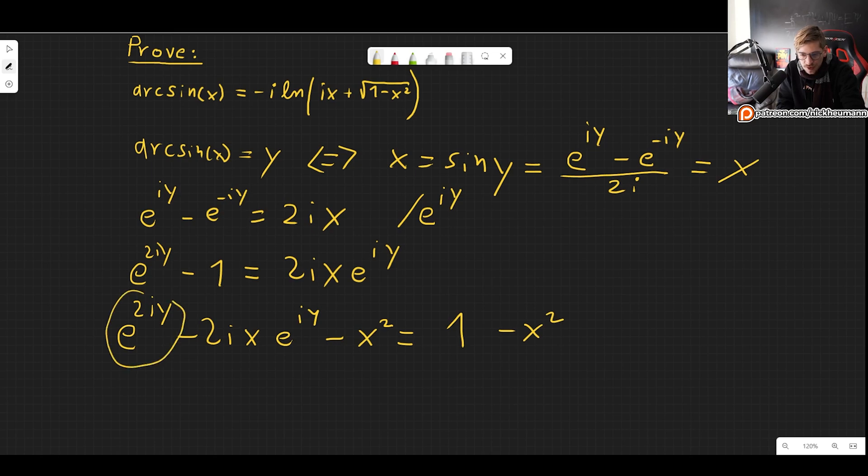We have e to the 2iy, which is this thing squared, and minus x squared, which is this thing squared. And we have two times that.